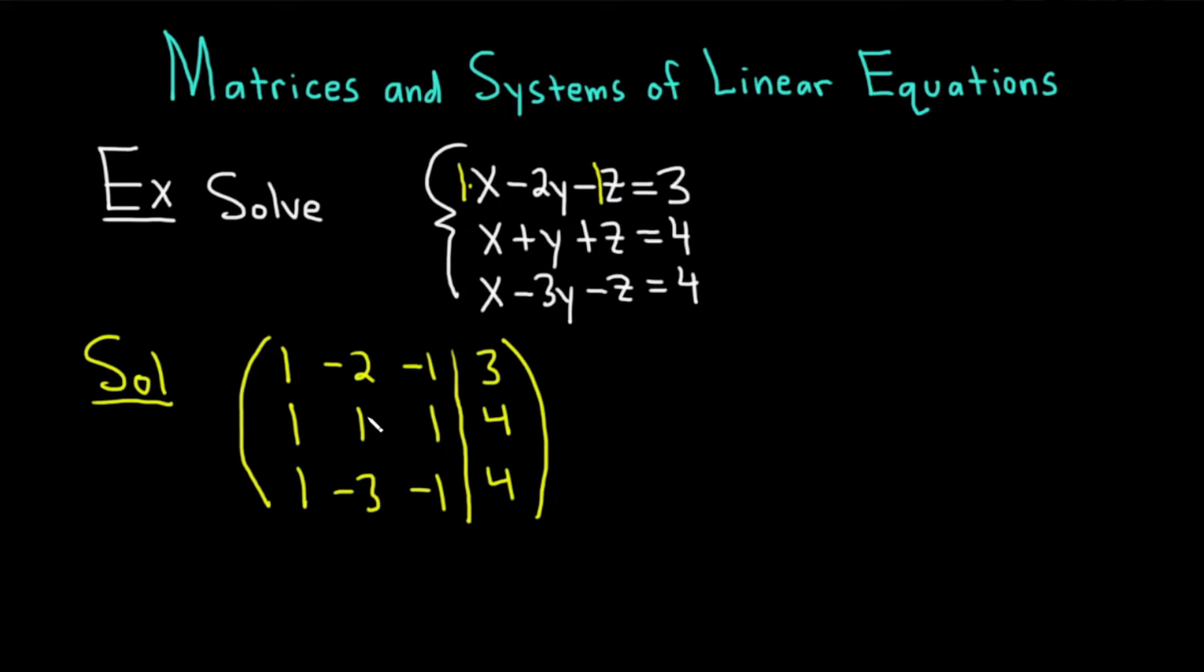And the goal is to basically make it look like this. I'm going to write it in blue up here. So something like this: 1, 0, 0, 0, 1, 0, 0, 0, 1. And then over here maybe we'll have some numbers like 2, 3, and 4.